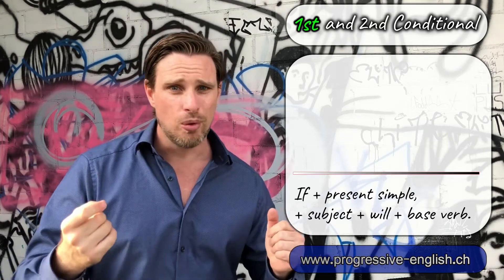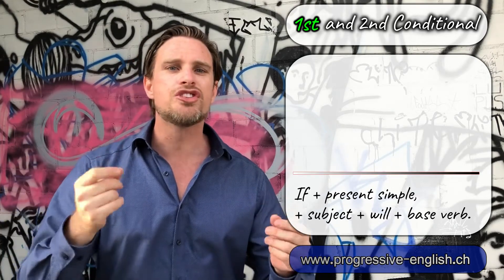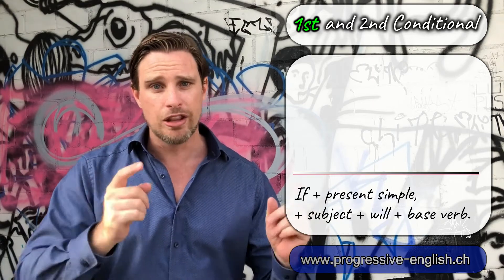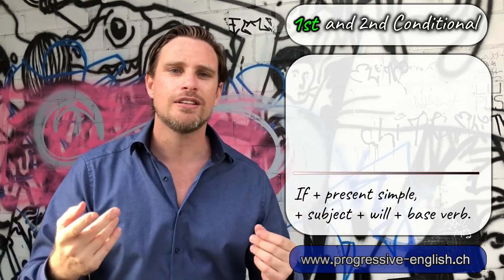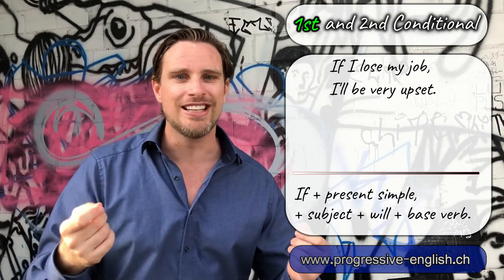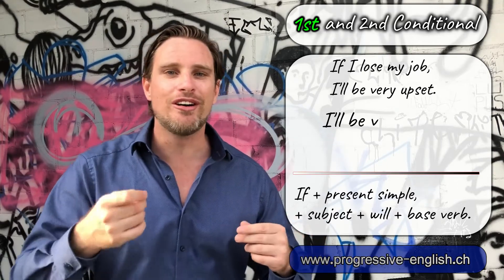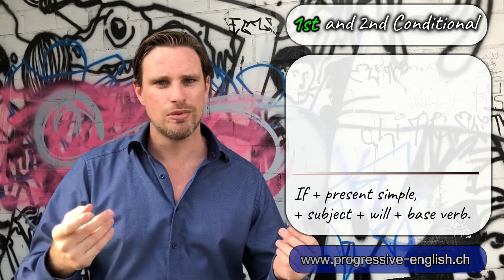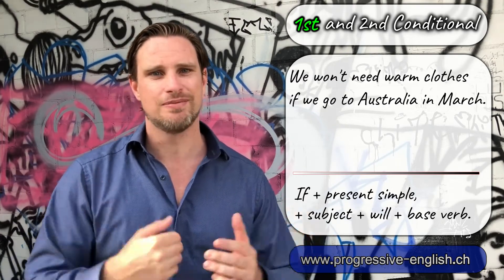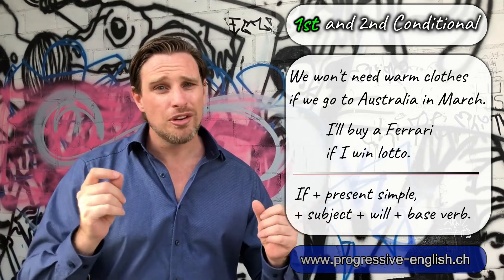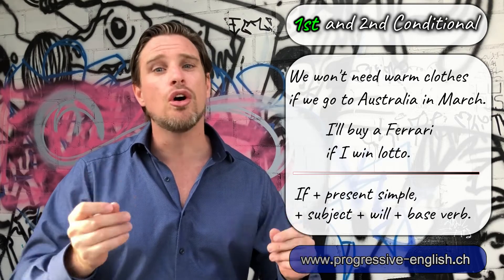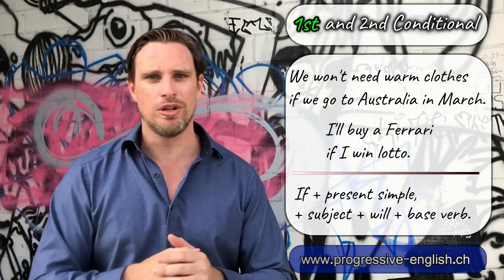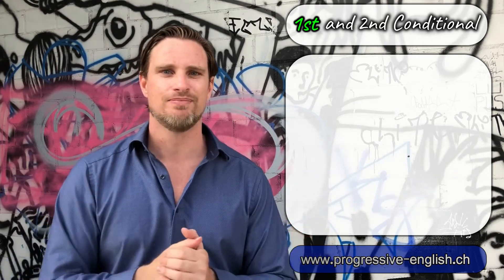One other point: with all the conditionals, we can change the order of the if clause and the result clause. So we can say, 'if I lose my job, I'll be very upset,' or 'I will be very upset if I lose my job.' Another example: 'we won't need warm clothes if we go to Australia in March,' and 'I'll buy a Ferrari if I win Lotto.' You might have noticed the rule: when the if clause comes second, we don't use a comma. We do not use a comma when the if clause comes second.